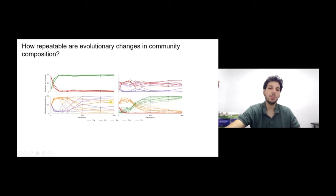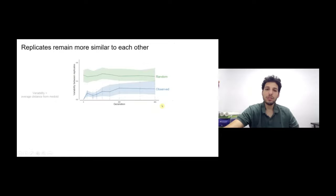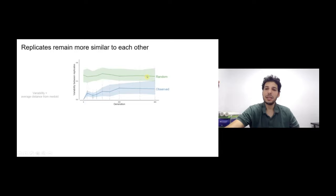To quantify this across all communities: the blue line gives the observed variability between replicates as a function of time. It increases a bit at the beginning from our identical initial conditions but then increases very little during co-evolution. Comparing to the green line — which shows variability when we shuffle replicates across pairs — replicates are still much more similar to each other than to the composition of different communities.